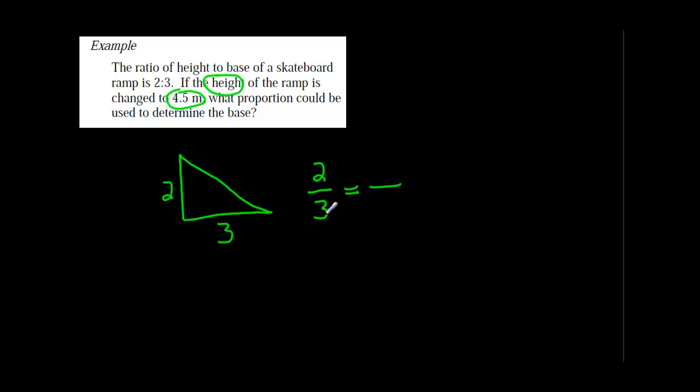Where was height? Was it the 2 or was it the 3? Height was the 2. So when you set these things up, you're going to keep height on top and keep the base on the bottom. You've got to keep things the same. So you're going to put the 4.5 right there, because the height of the new ramp would be 4.5. We don't know what the base is going to be. We have just set up our proportion. We're going to solve it in the next lesson, but for now, I just want to make sure you know how to set this up.